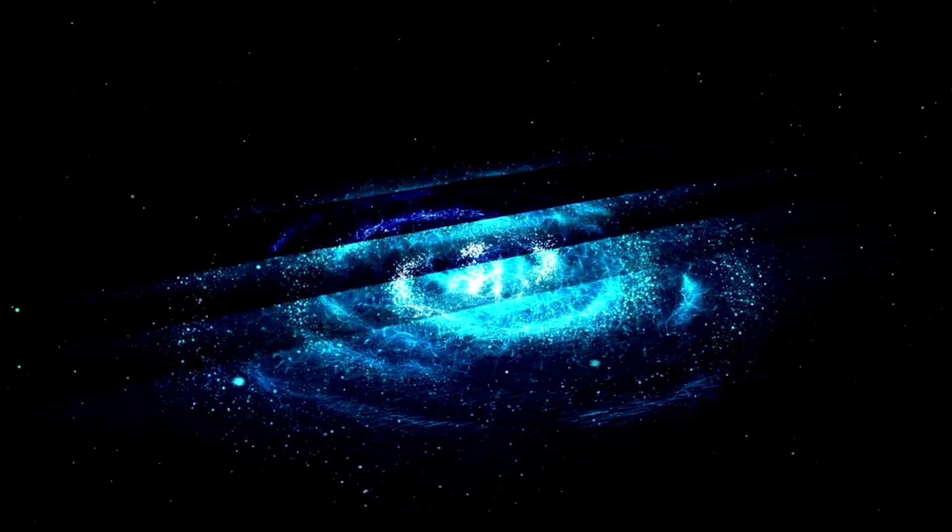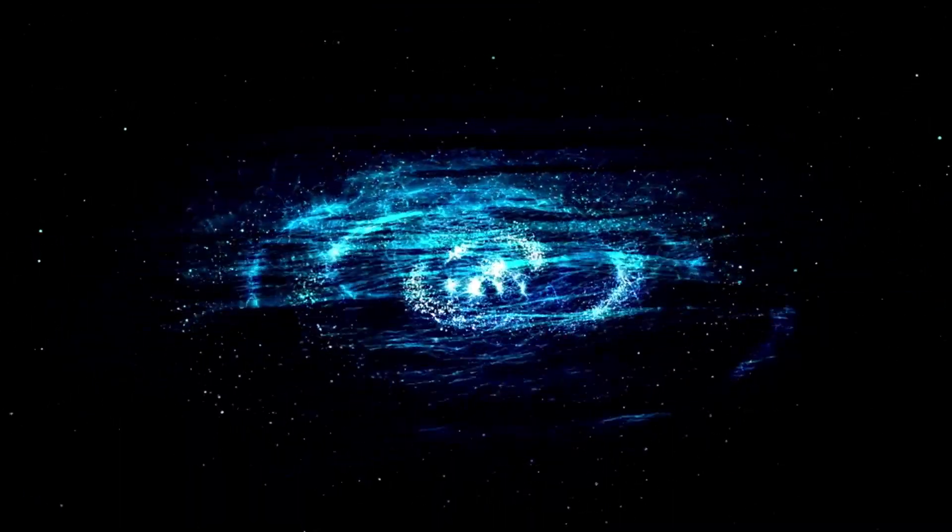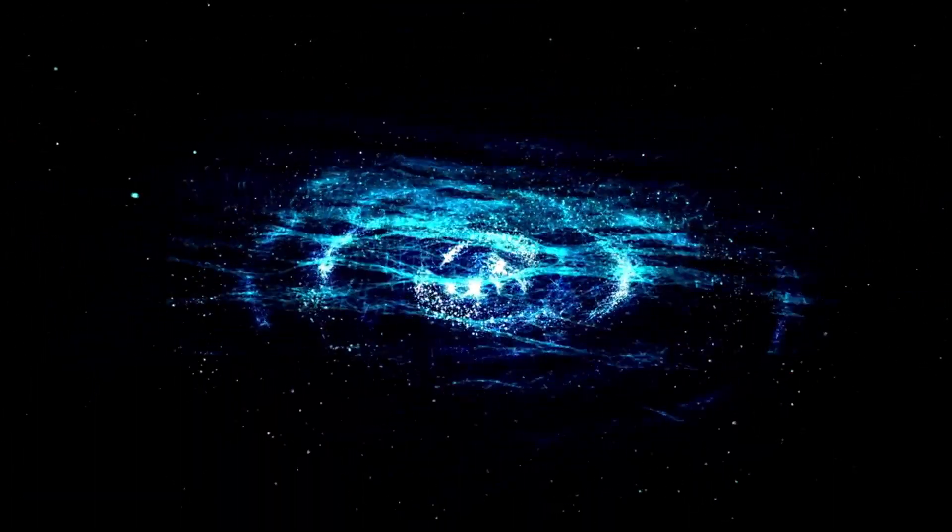As the cycle progresses, the number of sunspots increases. Sunspots are regions of intense magnetic activity and are associated with the emergence of magnetic flux from the Sun's interior. These sunspots appear in pairs with opposite magnetic polarity and migrate towards the equator over time.